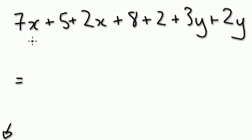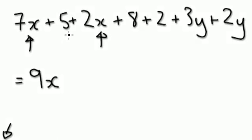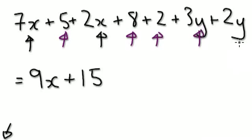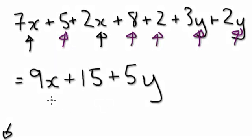Okay, look for things that are the same. You've got x here and x here, no other x — so that becomes nine x. Now you've got single numbers: five, eight, and two — five plus eight plus two is fifteen, so plus fifteen. And for y: three y plus two y is five y, so plus five y.